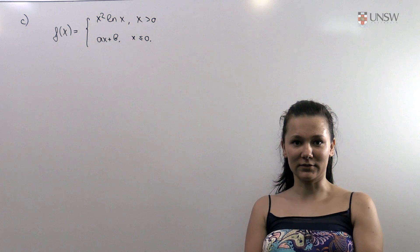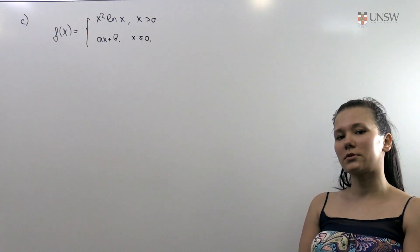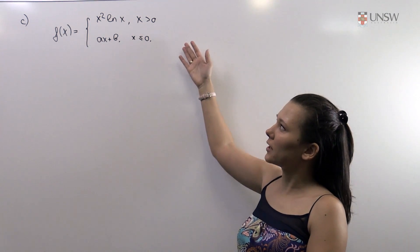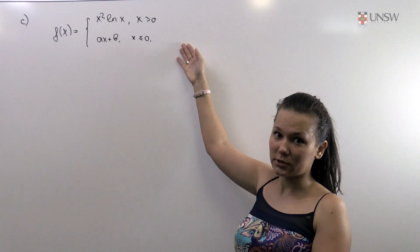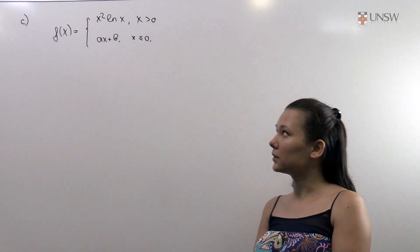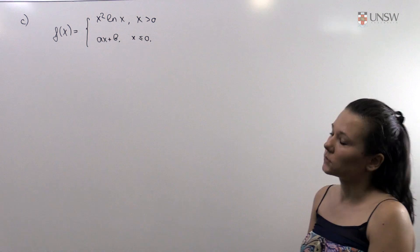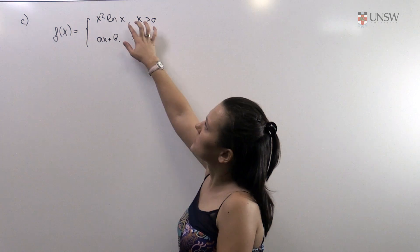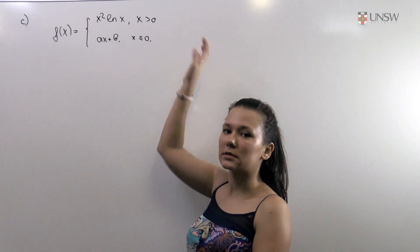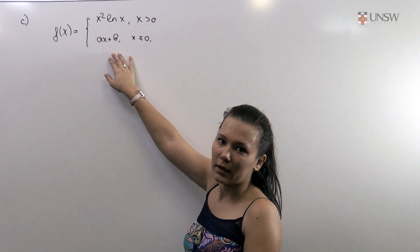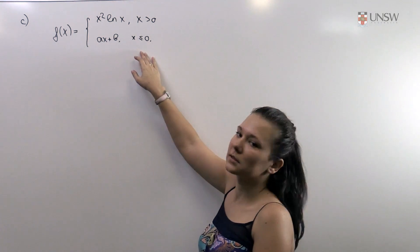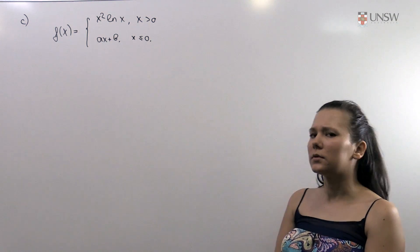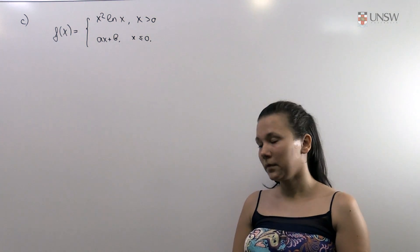The third part of this question: we need to find all possible values of the constants a and b such that the function f(x) is differentiable at x equals zero. We will be looking at our piecewise function: f(x) equals x²·ln(x) when x is strictly positive, and ax + b when x is less than or equal to zero.